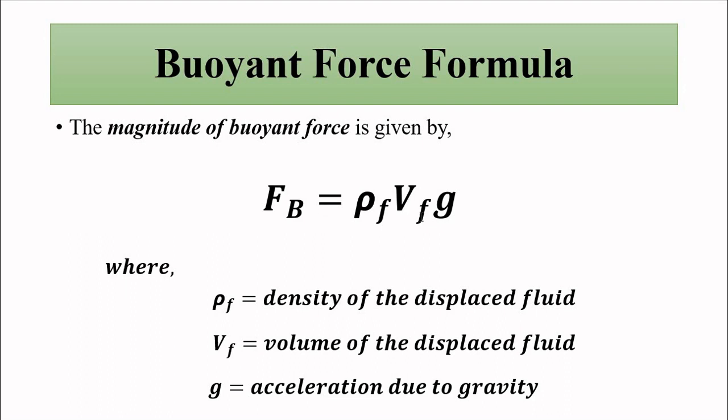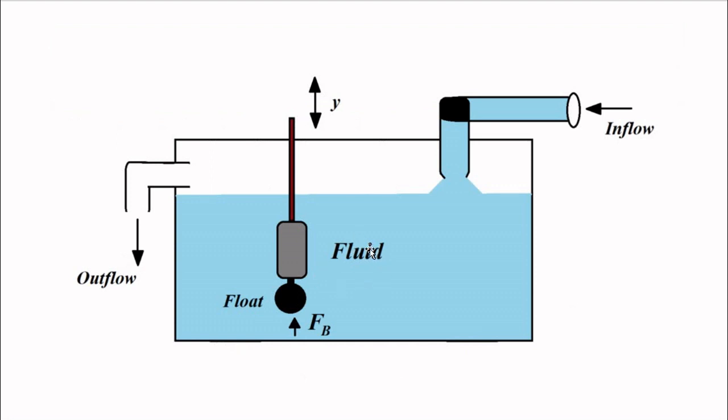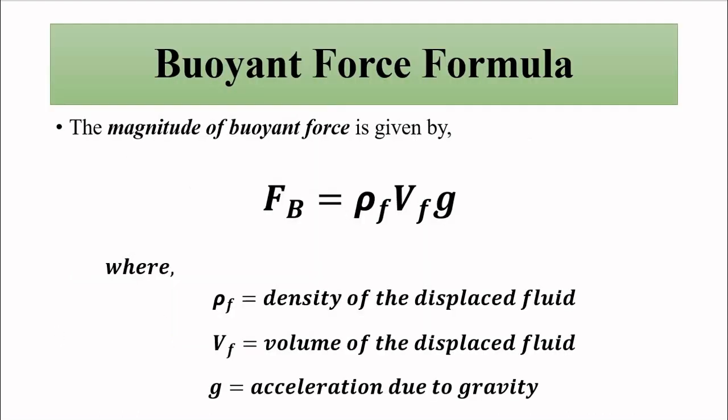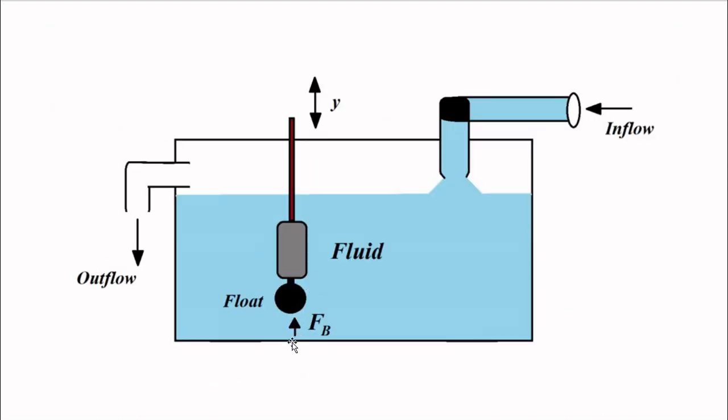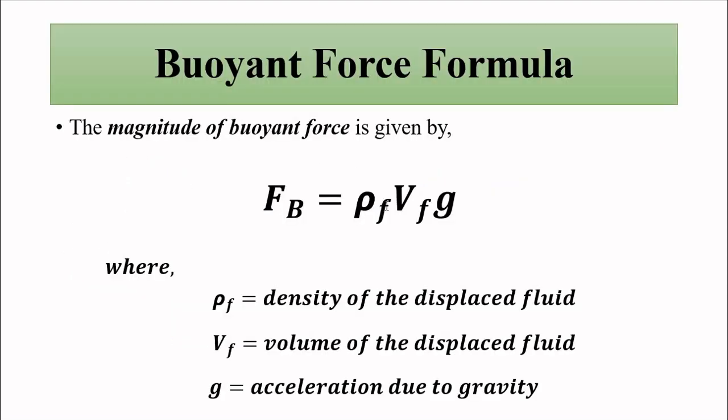That scale is calibrated directly in terms of density. Because V_f is fixed, g is fixed, this buoyant force is directly dependent on the density of the fluid. No matter whichever fluid is there in this container which is measured, volume of the fluid that is displaced will be fixed because of the fixed size dimensions of the float. Also, the acceleration due to gravity is fixed. The buoyant force which acts because of the displaced fluid is directly dependent on the density of the fluid.